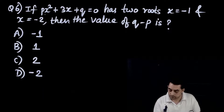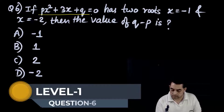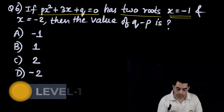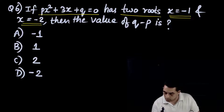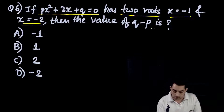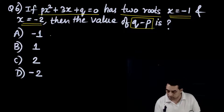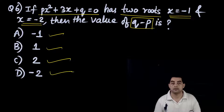Question number 6: if px² + 3x + q = 0 has two roots, x = -1 and x = -2. Find the value of q - p. Options: -1, 1, 2, -2.